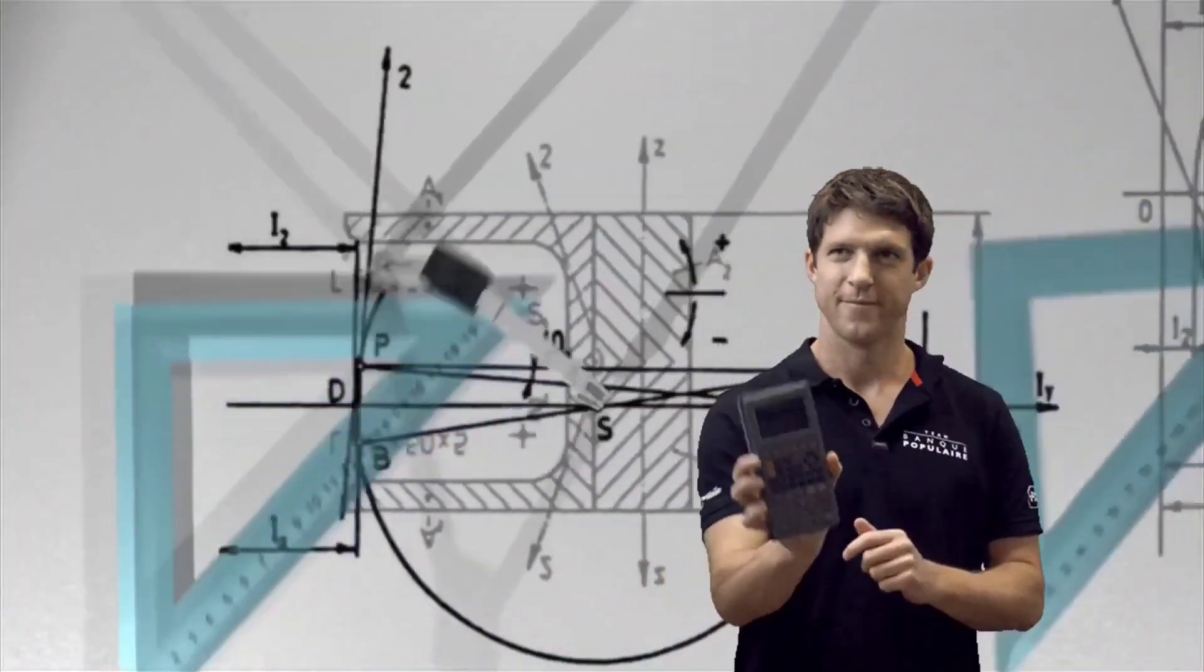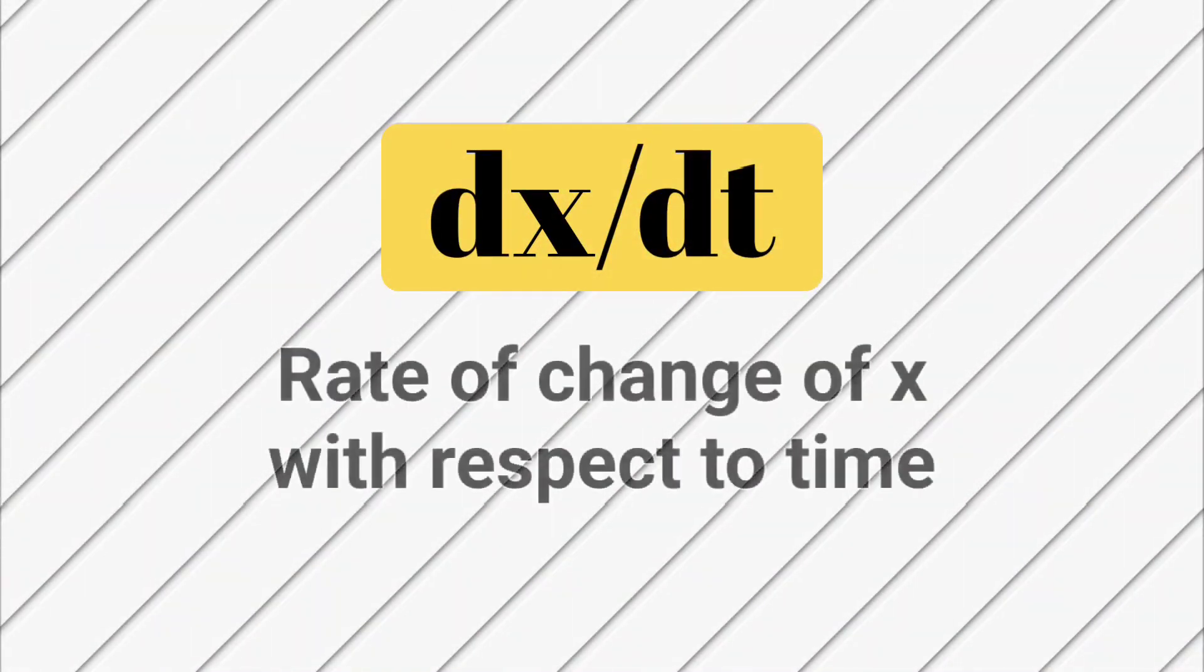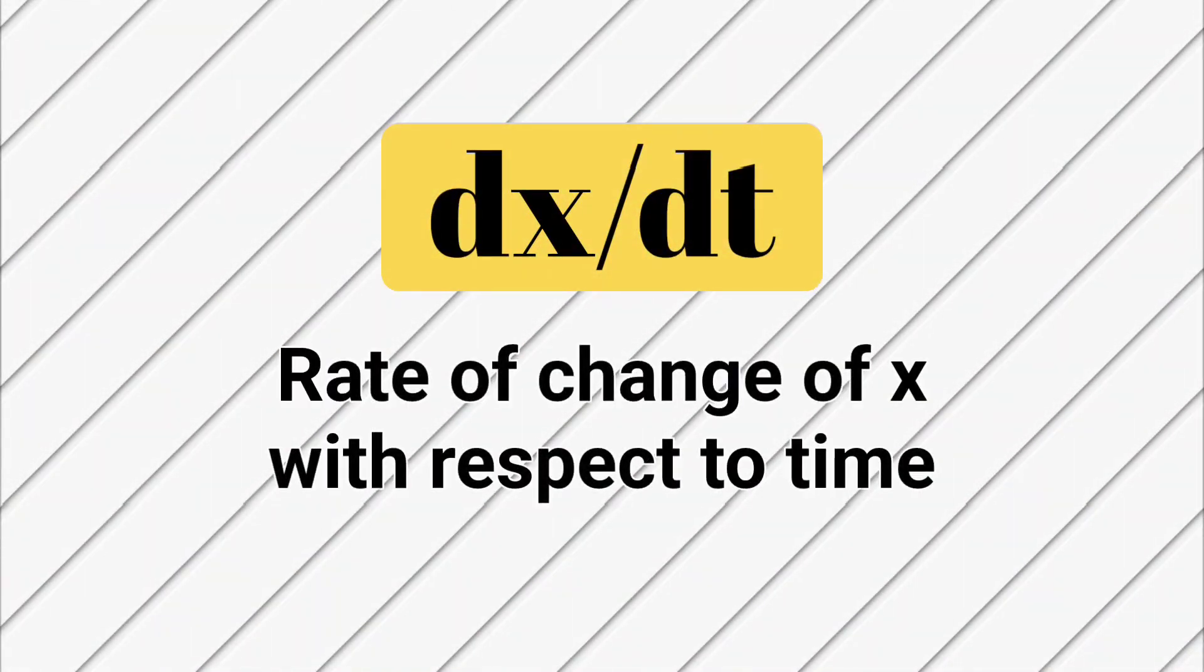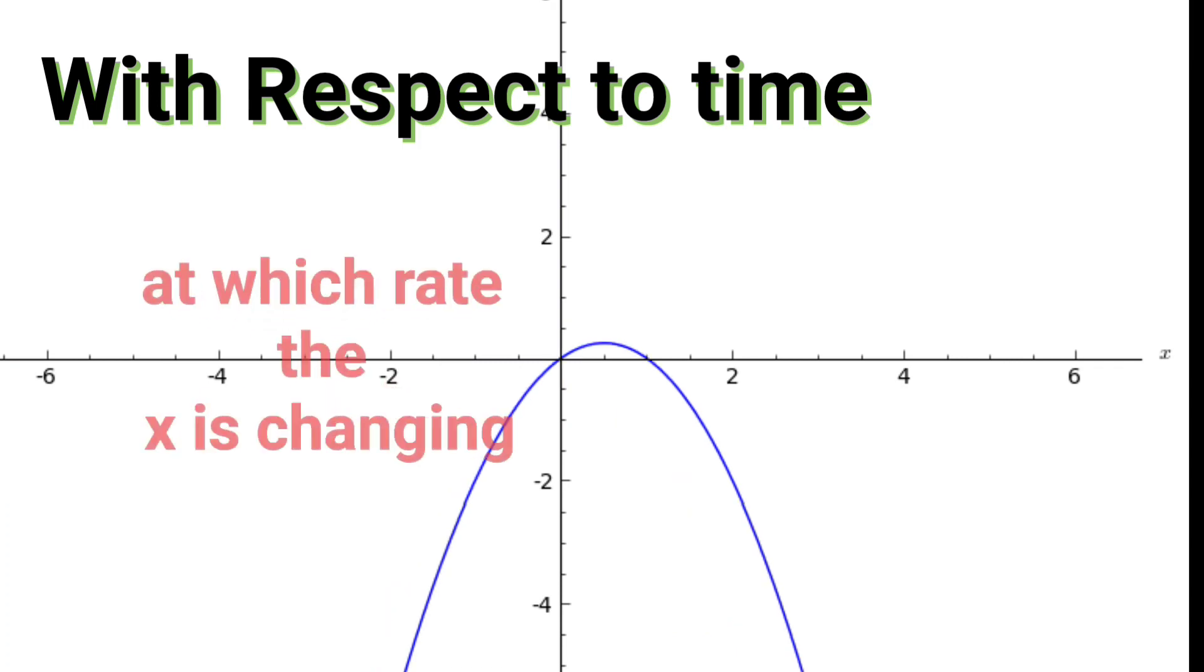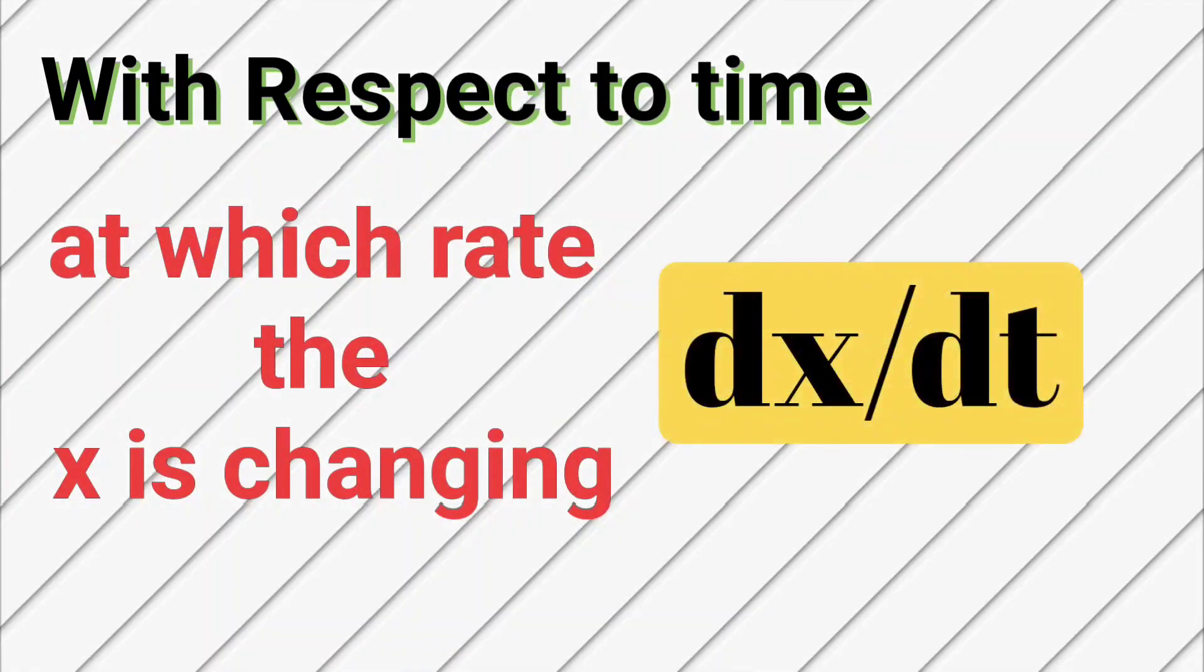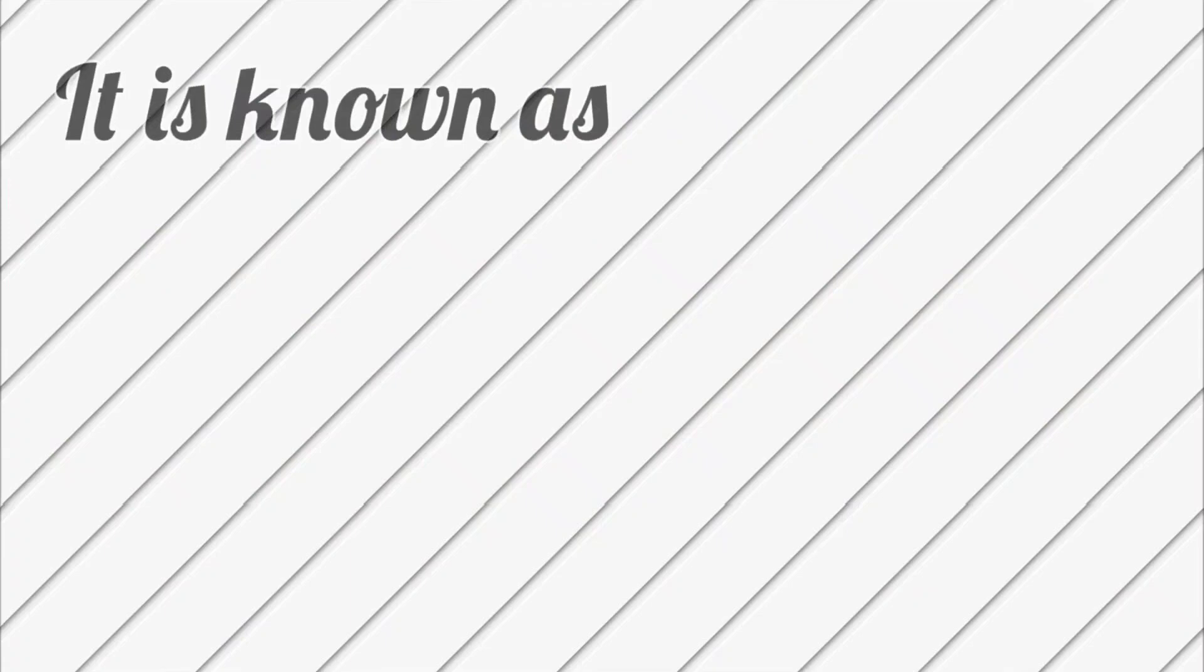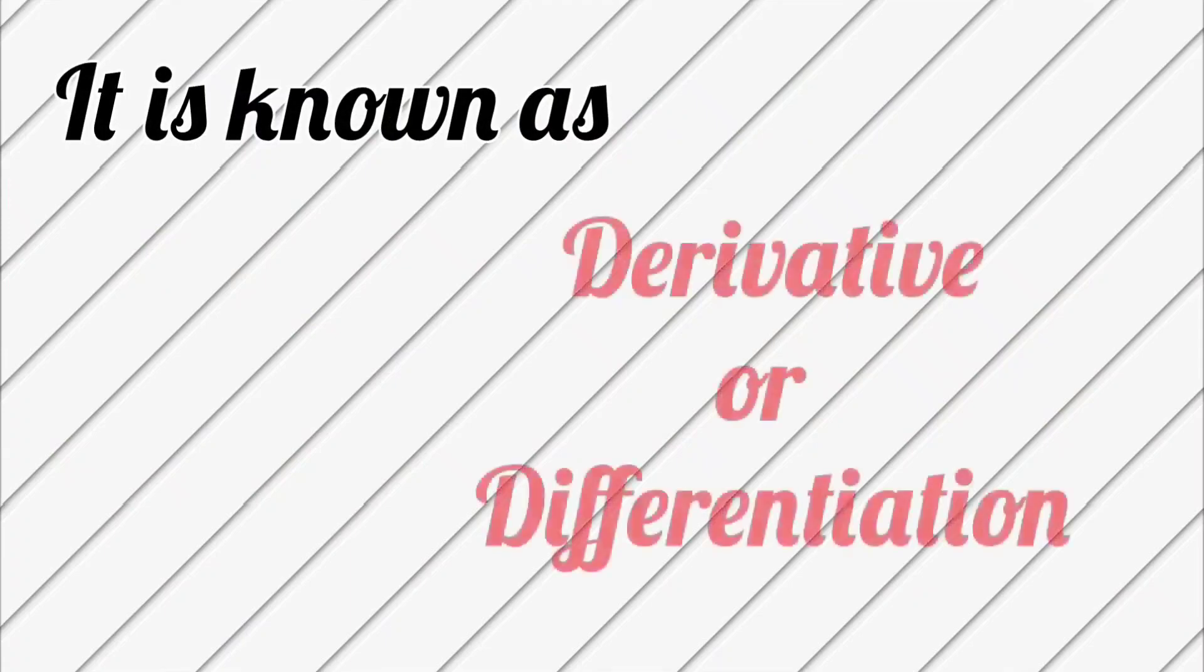As we have studied in mathematics, that dx over dt is the rate of change of x with respect to time. Means with respect to time, at which rate x is changing, which is derivative or differentiation.